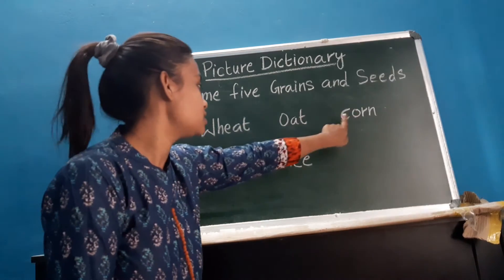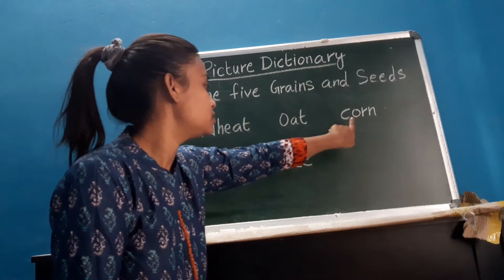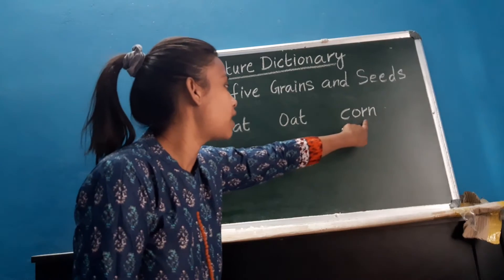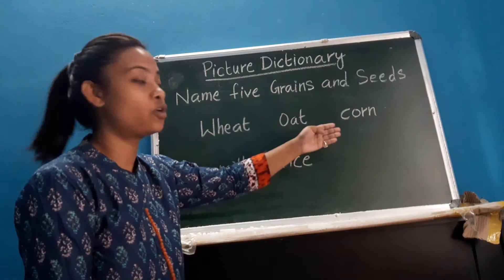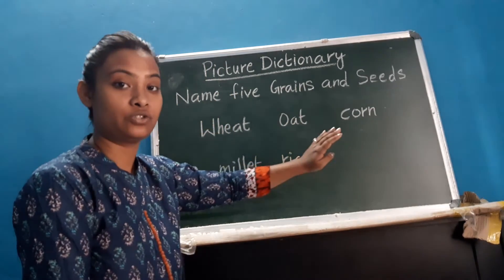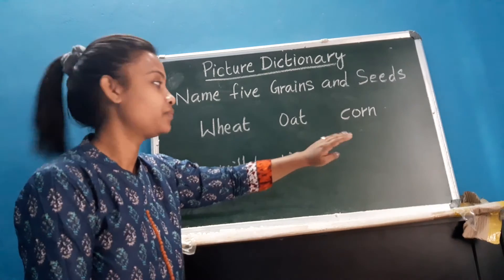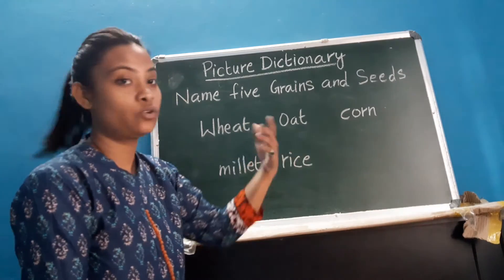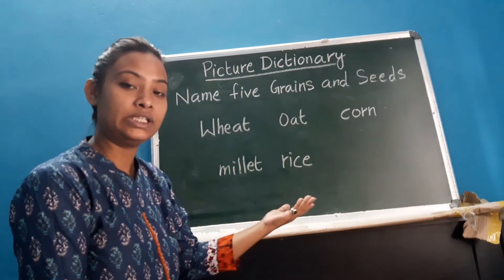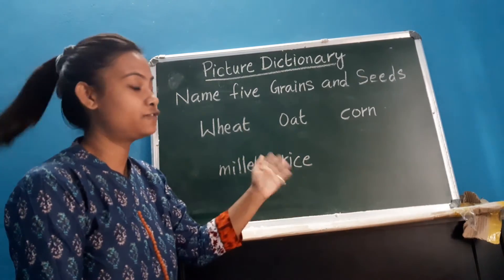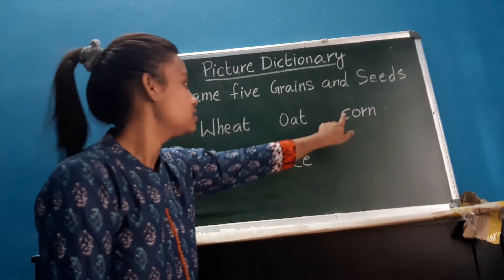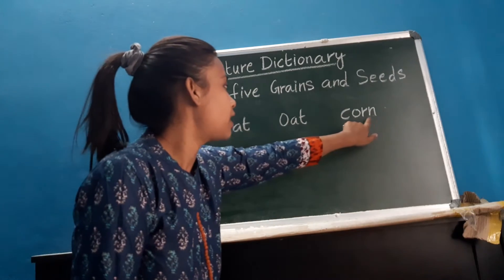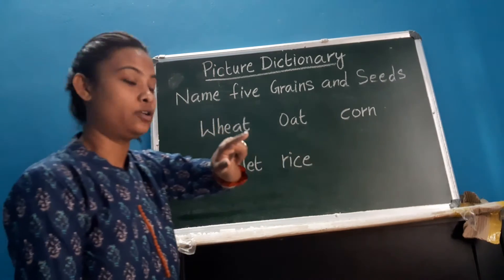Next is corn. C-O-R-N, corn. Another name of corn is maize. It can also be eaten after it is cooked.